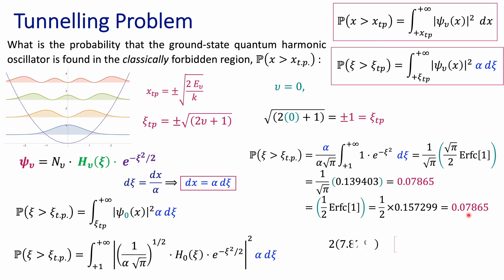From there, remember that the total probability is equal to two times that single-side result. With this, you end up with about 15.8% probability.